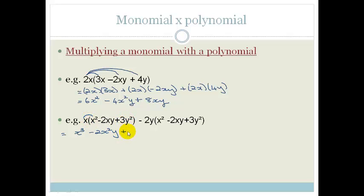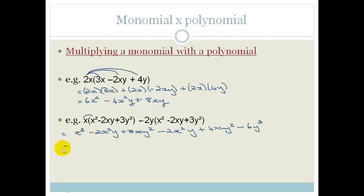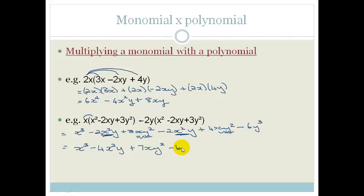Plus x times 3y squared becomes 3xy squared. Be very careful about the minus here. So it becomes minus 2x squared y. A minus times a minus is a plus: 2 times 2 is 4, and y times xy is xy squared. A minus times a plus is a minus: 2 times 3 is 6, giving 6y cubed. Simplifying, we combine like terms: x cubed minus 4x squared y plus 7xy squared minus 6y cubed.